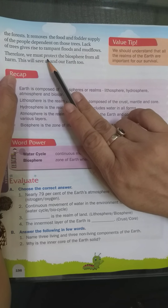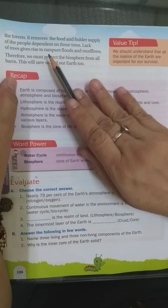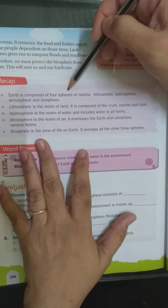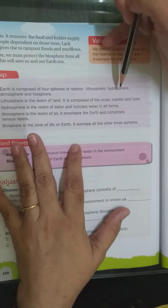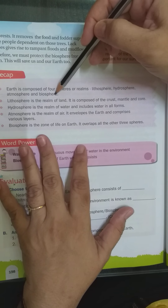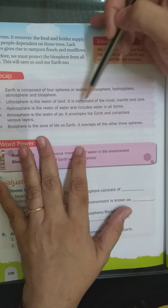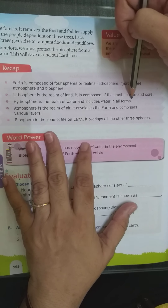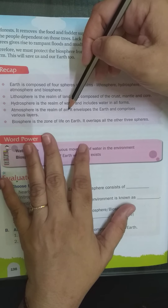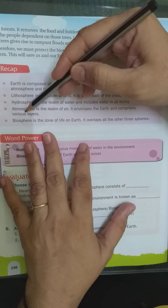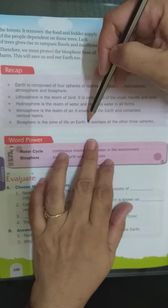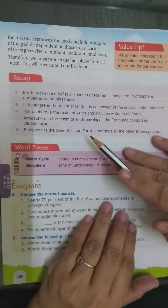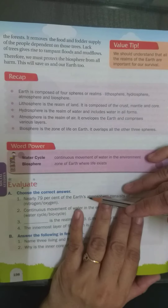In recap: Earth is composed of four spheres or realms — lithosphere, hydrosphere, atmosphere, and biosphere. Lithosphere is the realm of land, composed of crust, mantle, and core. Hydrosphere is the realm of water and includes water in all forms. Atmosphere is the realm of air — it envelops the earth and comprises various layers. Biosphere is the zone of life on earth and overlaps all the other three spheres. Please revise and complete your question answers. Thank you.